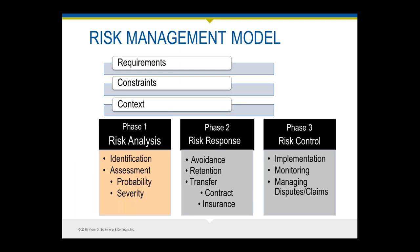It starts with the risk management model. This can apply to any undertaking you're about to do. It starts with what are the requirements — the program you're being asked about, constraints in terms of budget, schedule, and context such as legal, economic, and political factors. All of that has to go into the mix of inputs. Then when you get the inputs, you start doing the risk analysis part, identifying and assessing the probability and severity of the risk.